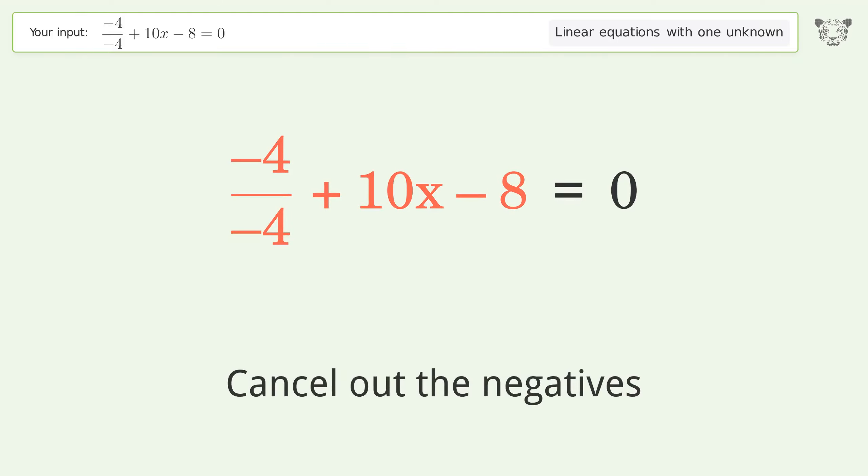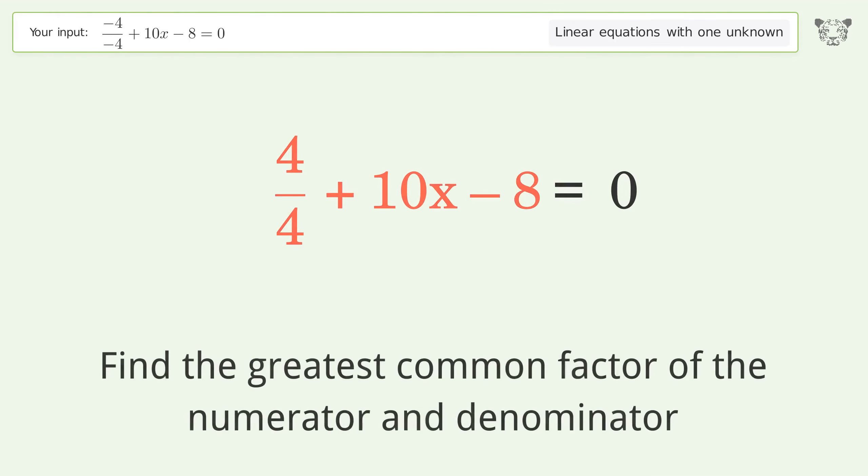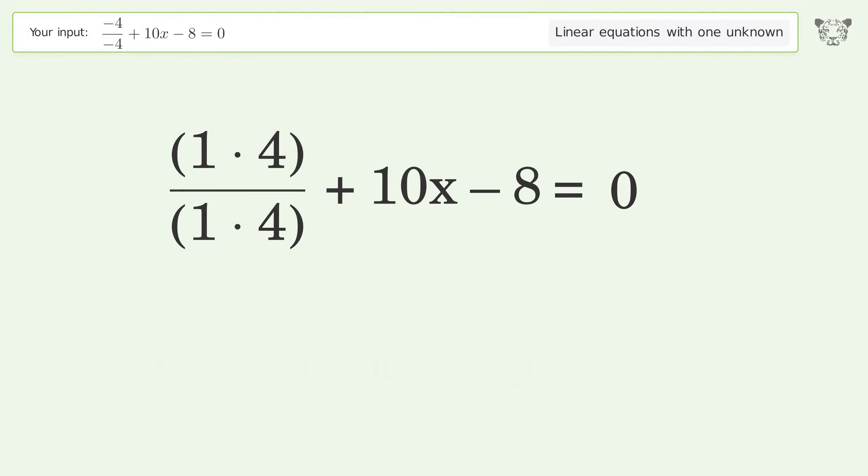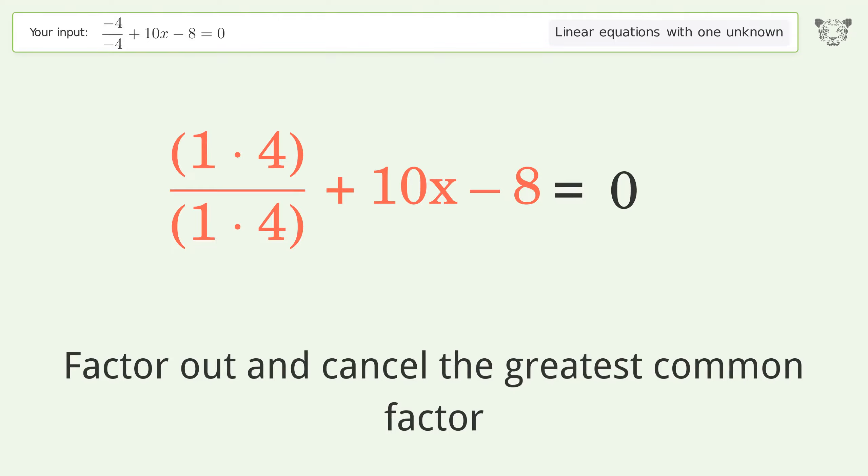Cancel out the negatives. Find the greatest common factor of the numerator and denominator. Factor out and cancel the greatest common factor.